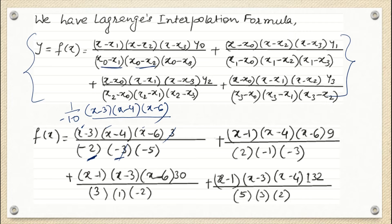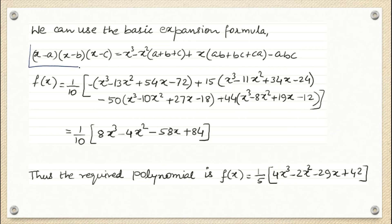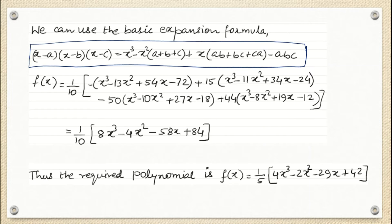To simplify, you can multiply the factors one by one, or use the algebraic formula: (x minus a)(x minus b)(x minus c) equals x³ minus x²(a+b+c) plus x(ab+bc+ca) minus abc. Here a is 3, b is 4, c is 6, so a plus b plus c equals 13. Therefore the expansion gives minus x² times 13, and so on.